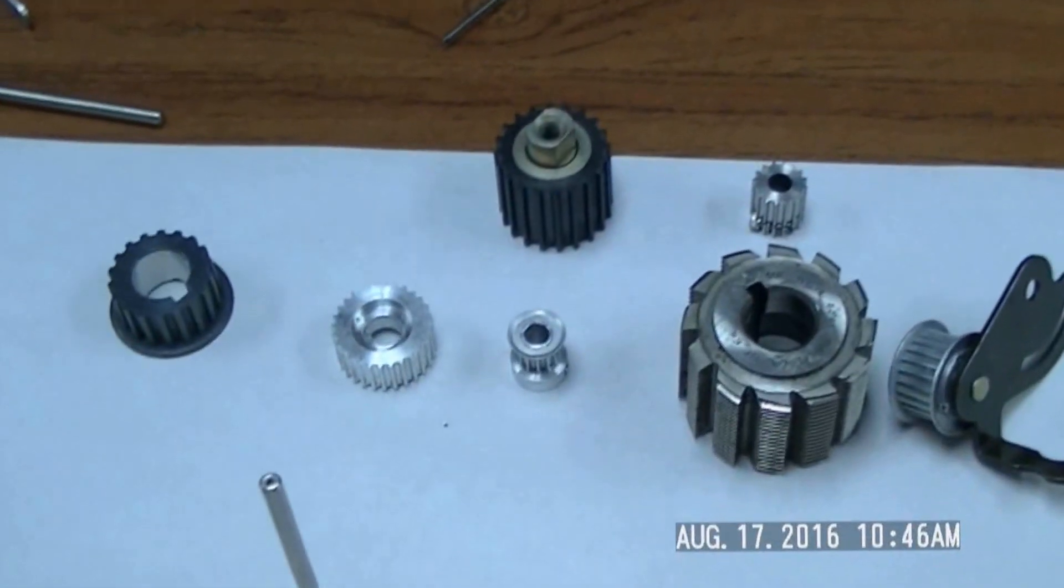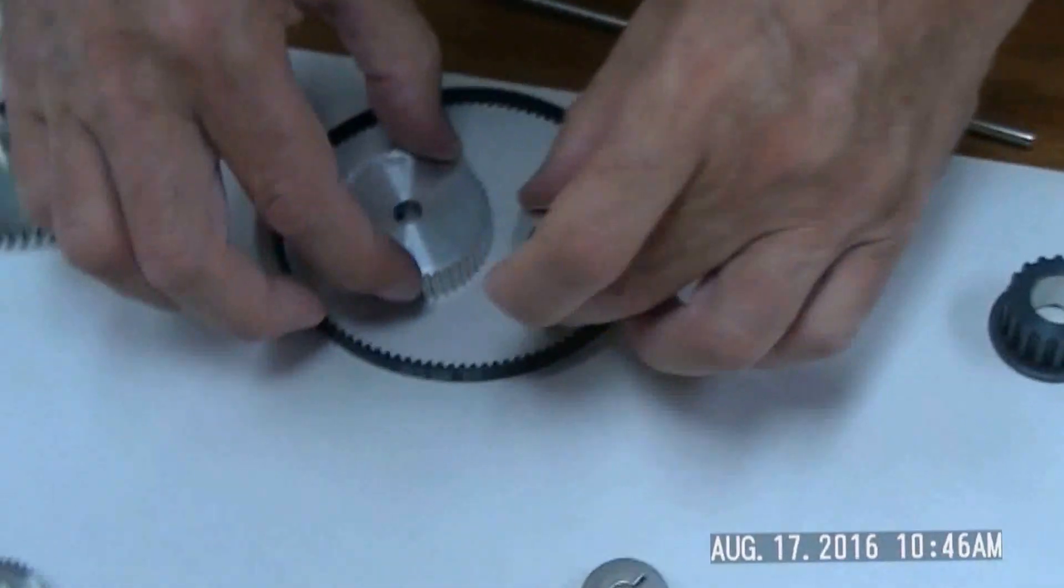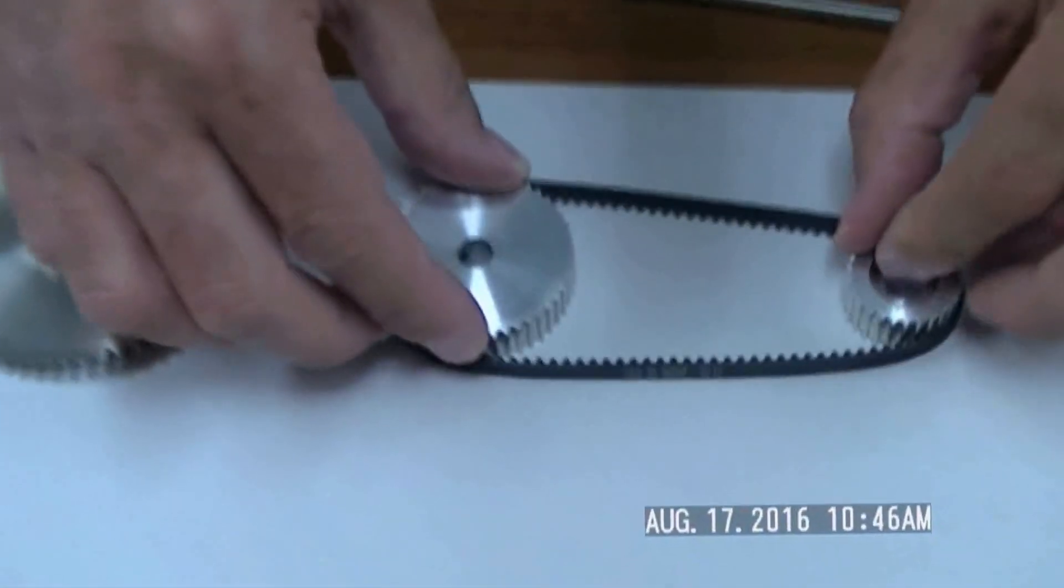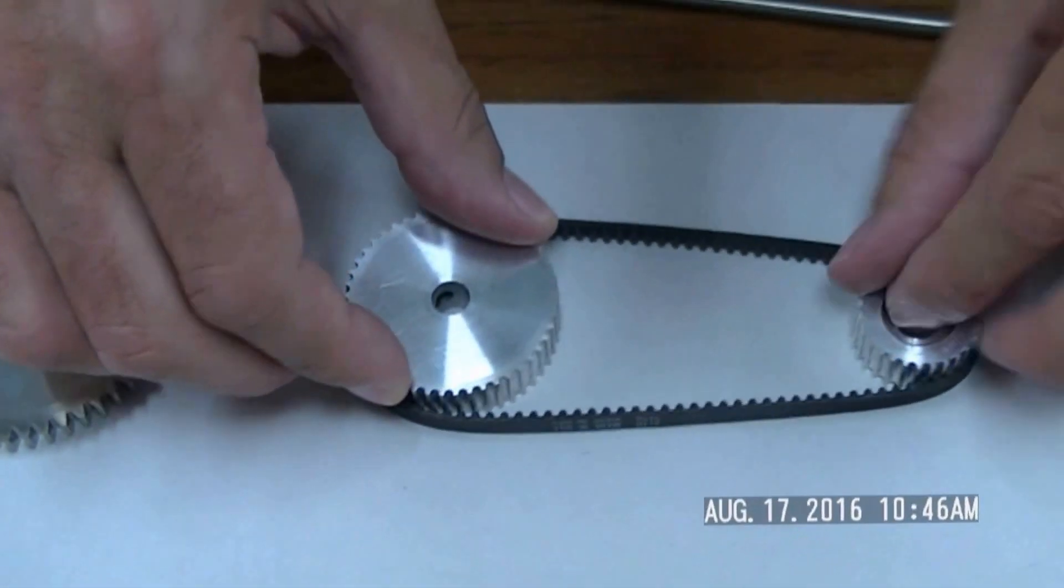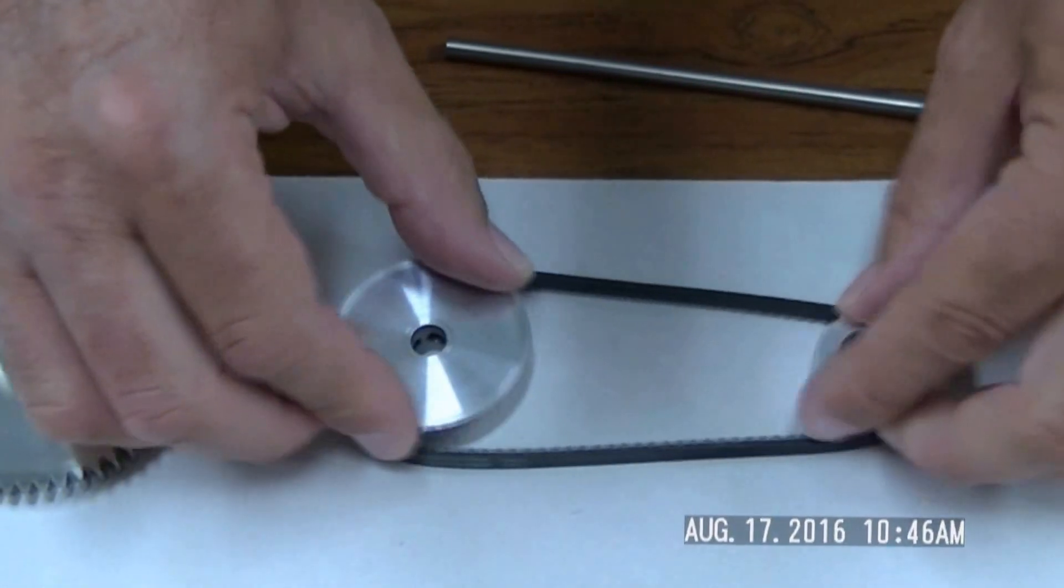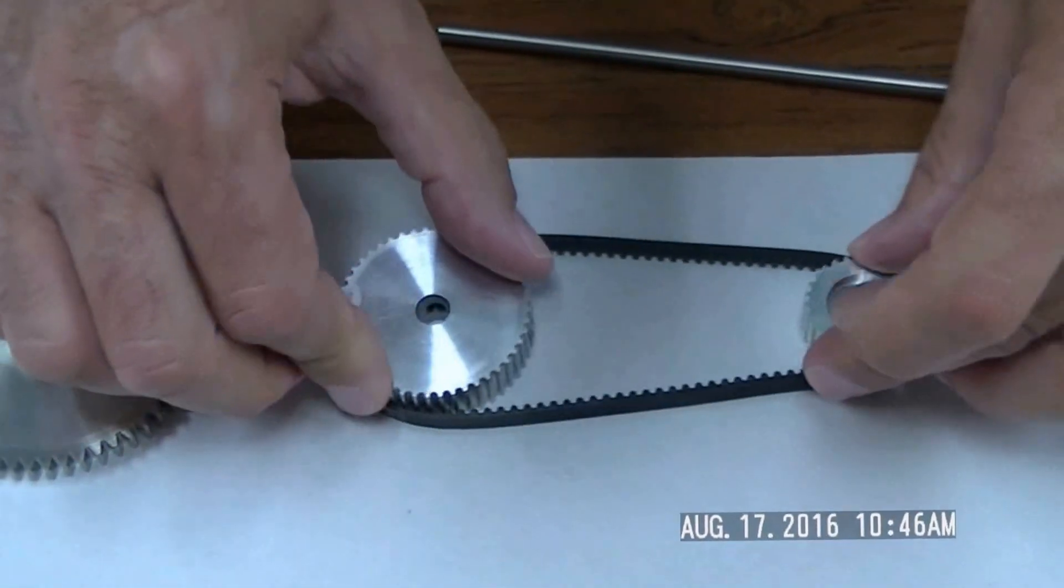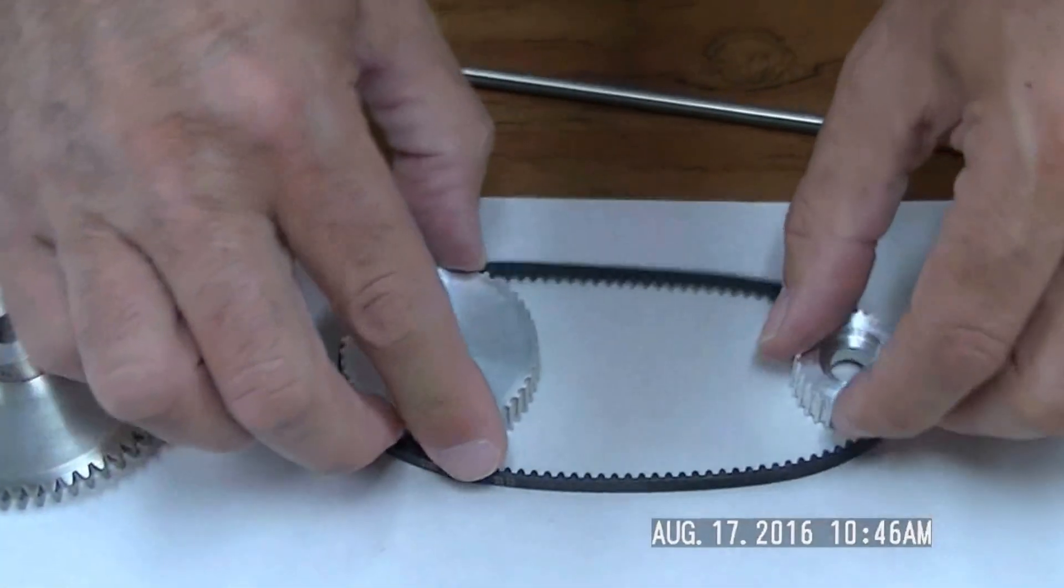A couple things to note about gears and pulleys. If you have two pulleys together, basically you drive them with a belt, and you see the directions of rotation on the pulleys are the same. If one goes forward, one goes with it. They both rotate either counterclockwise or clockwise in this case.